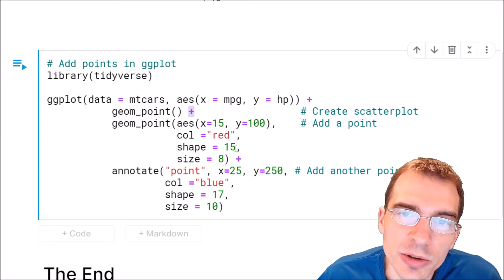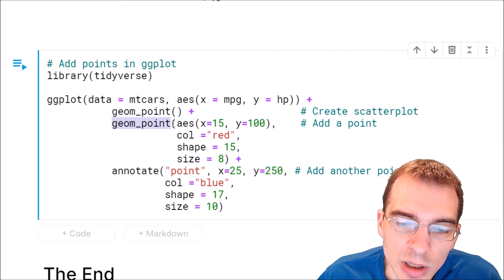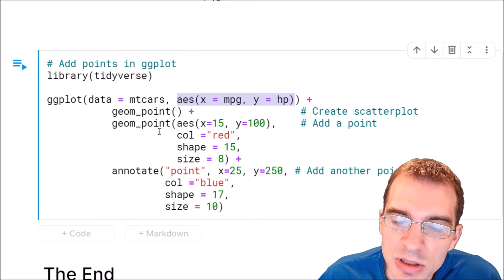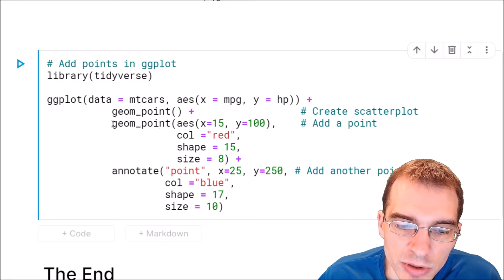So we'll say plus, we're going to add another geom_point. But in this case we're not going to use these data-based aesthetics. We're going to pass in specific values into the aesthetics at the X and Y positions that we want them at. So we're going to say geom_point.